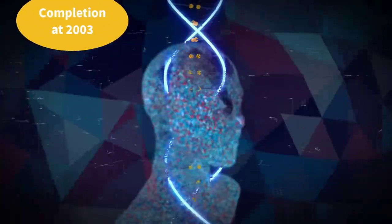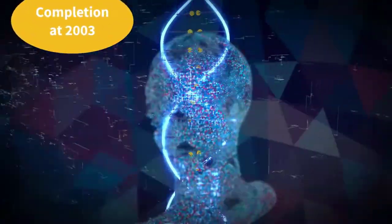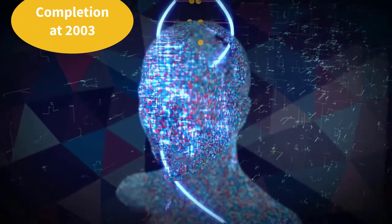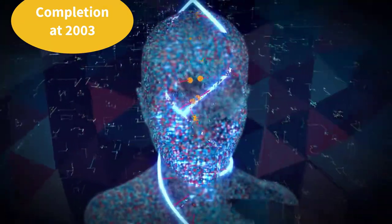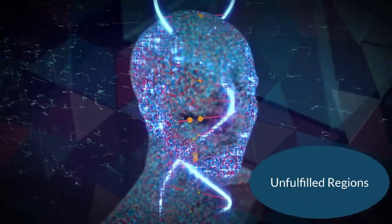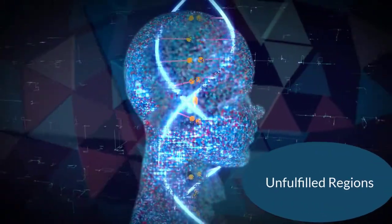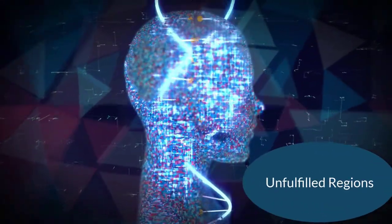Human Genome Project completion was announced in 2003 but it came with a catch as they were not able to put together all the genetic information in the genome. There were numerous unfulfilled regions that were too confusing to piece together at that time.